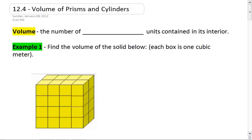Point four, volume of prisms and cylinders. Volume is the number of cubic units contained in a solid's interior.